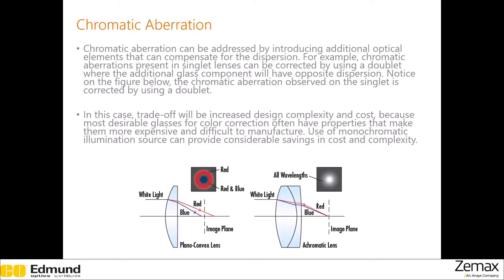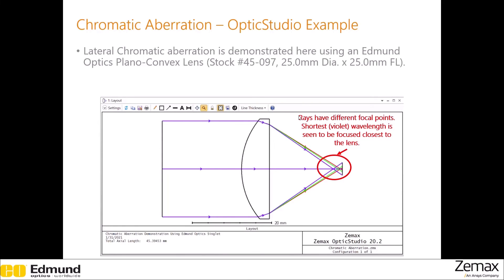Using doublets will of course increase the cost and design complexity. So what you can do instead is use monochromatic light sources, which will allow you to keep using singlet lenses and help manage cost. In this Optics Studio example, we are using an Edmund Optics plano-convex lens to demonstrate chromatic aberration. We are using three different colors — blue, green, and red — denoting different wavelengths of light. As expected, these three rays have different on-axis focus, and the shortest wavelength focuses first.